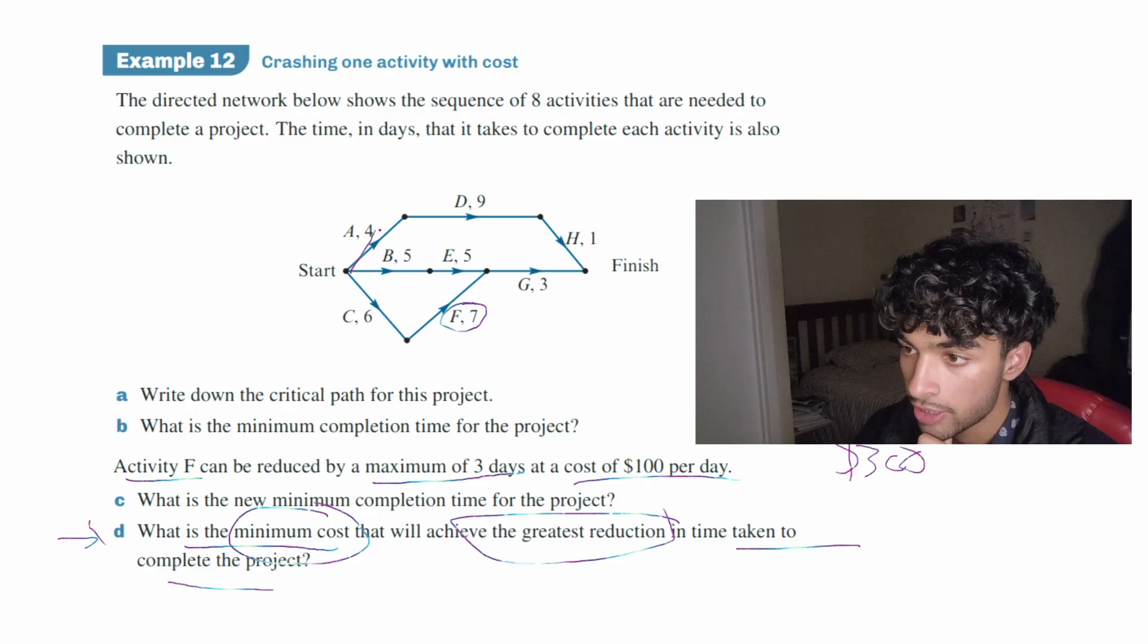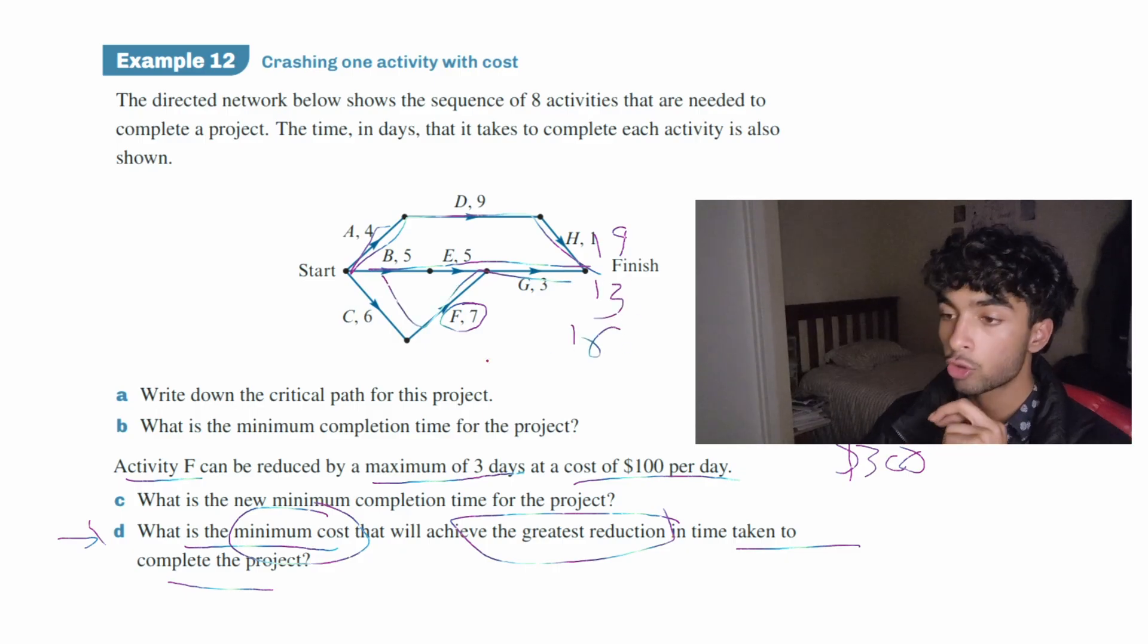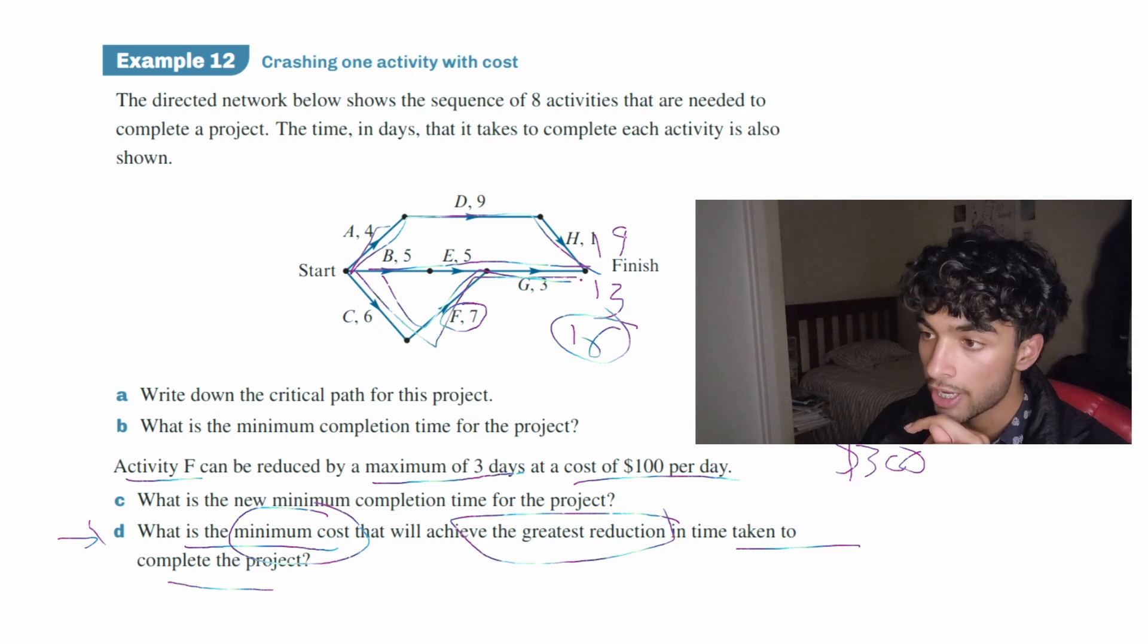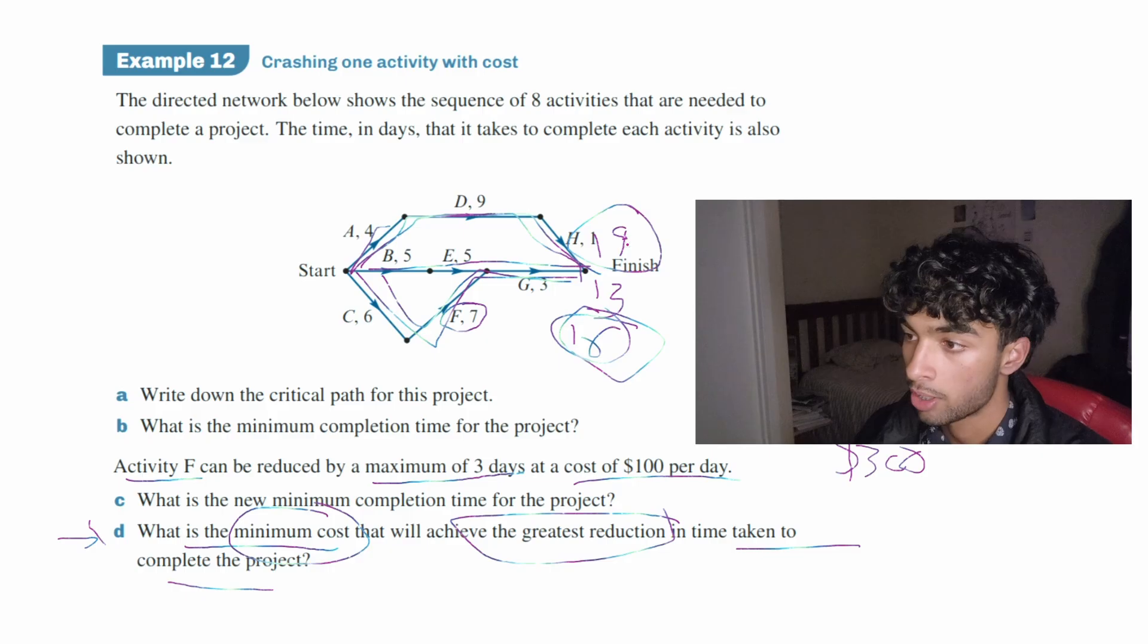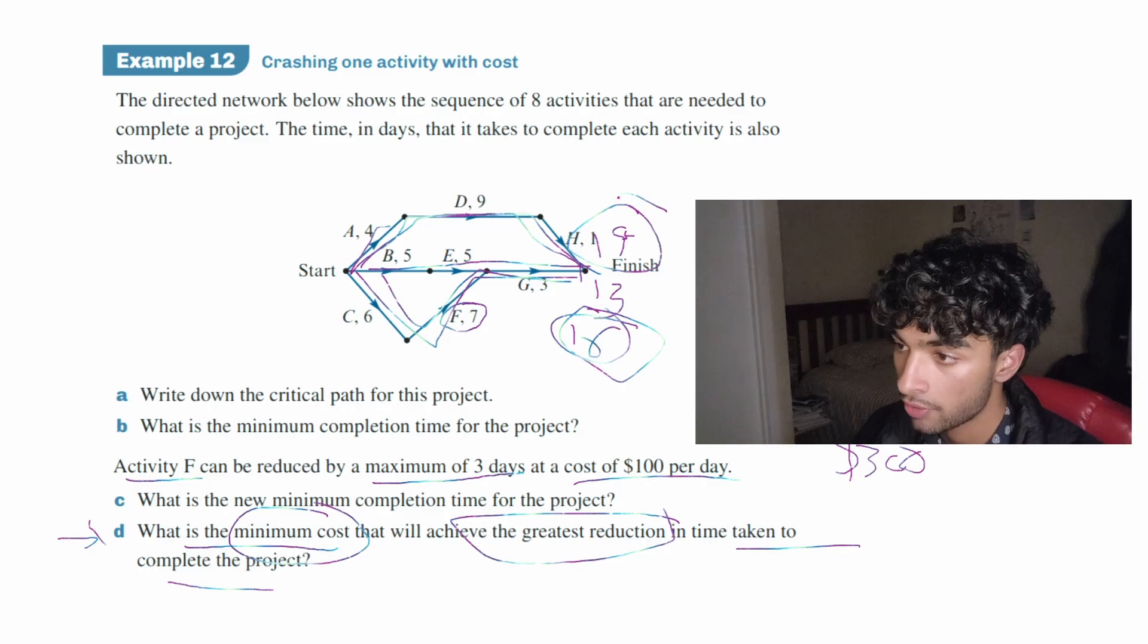So what I'll do here is find the critical paths for each path. So 4 plus 9 plus 1 is 14, 5 plus 5 plus 3 is 13, 6 plus 7 plus 3 is 16. So the critical path is 16 and as we can see, F lies on that critical path. So what is the second longest critical path? And that is 14 and as we can see, activity F is not on this second longest path, which means that if we reduce F three times, it's not going to be effective because the next longest path is 14.